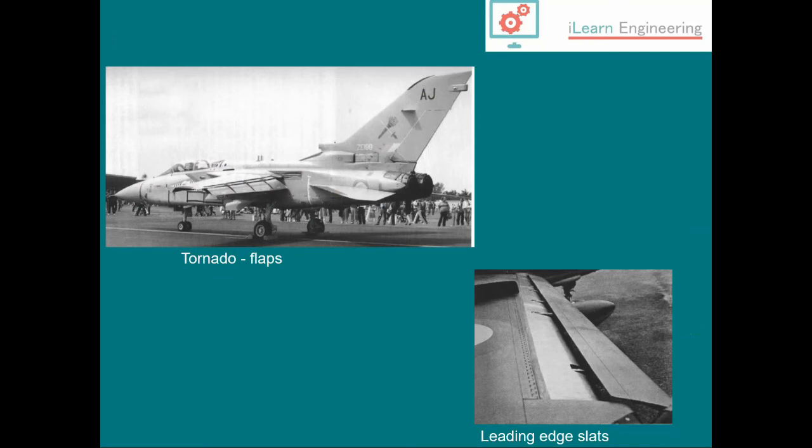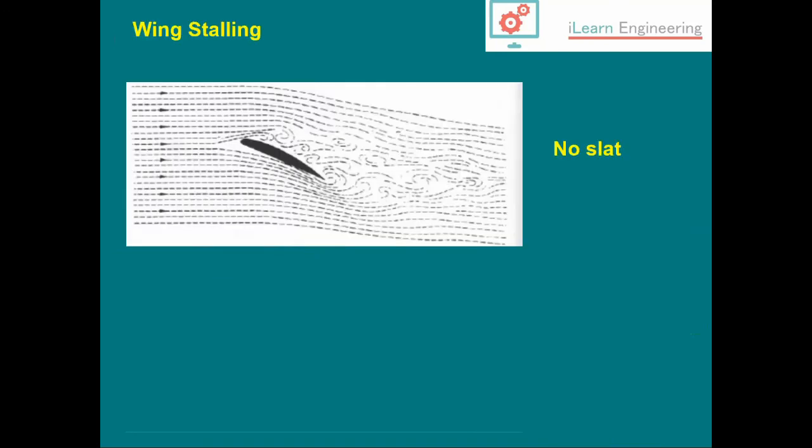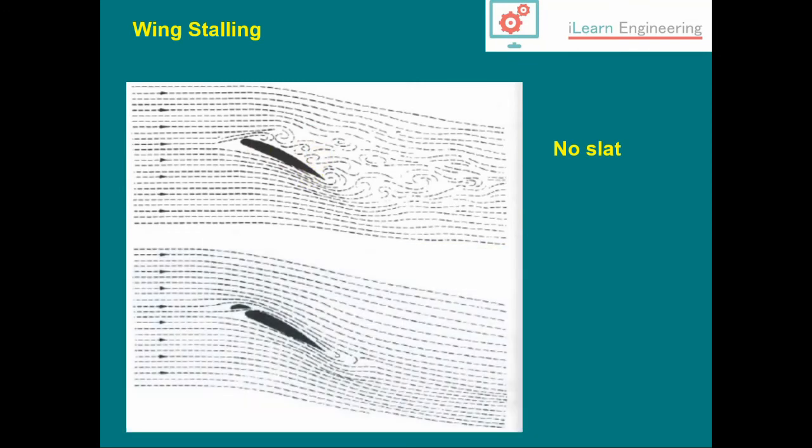Military examples include the Tornado. If we take a snapshot of streamlines during a stall, without a slat, just a basic airfoil, we get flow separation on the upper surface leading to loss in lift and increase in drag. If we incorporate a leading edge slat, that helps delay that flow separation on the upper surface, maintaining lift and reducing drag.